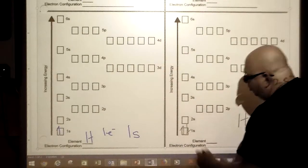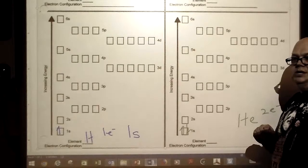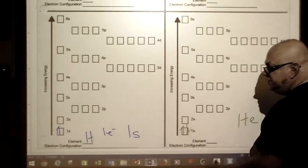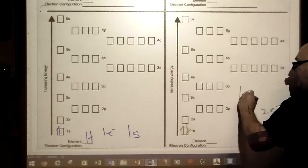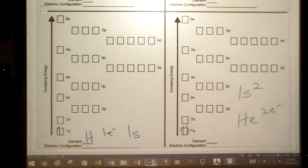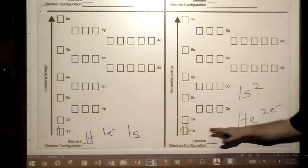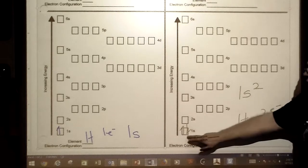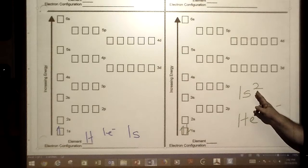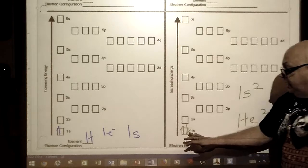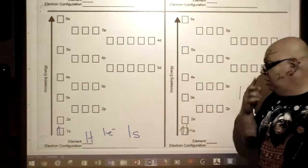The only way electrons can stay in the same sublevel is they have to spin opposite of each other. One goes clockwise, the other counterclockwise. We have an arrow going up, an arrow going down. The electron configuration for helium is 1s².